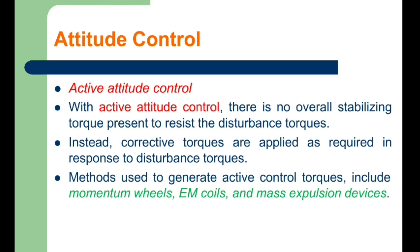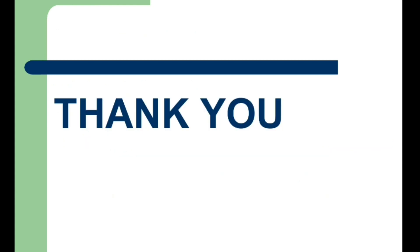In active attitude control, the correct torques are applied as required in response to disturbances. Momentum wheels and electromagnetic coils are the methods used to generate active control torque.